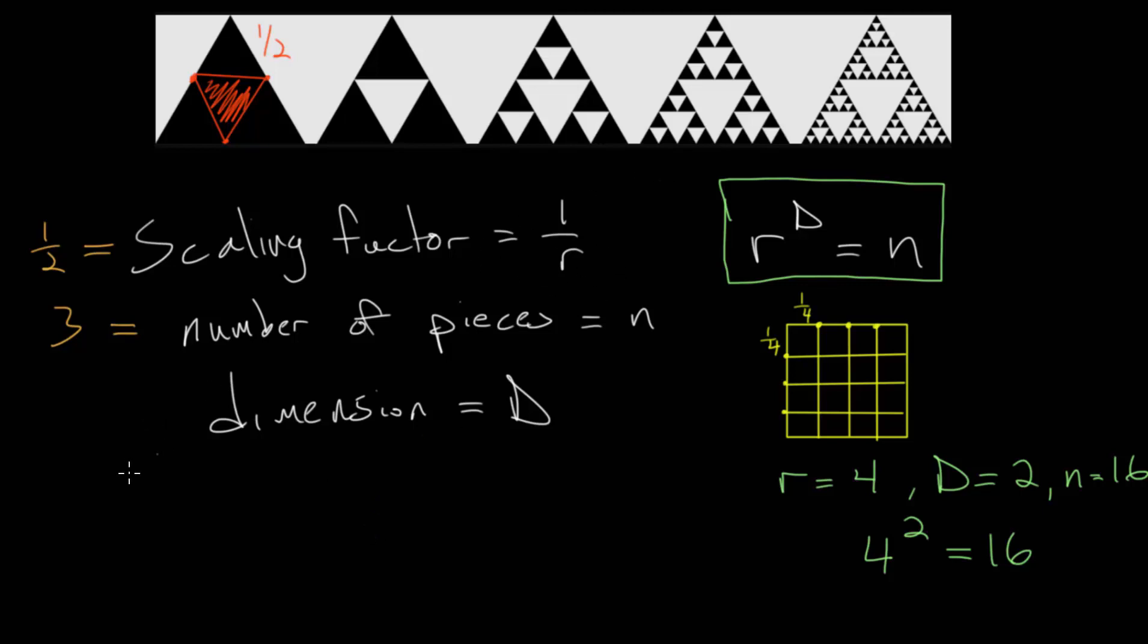Since notice that r is 2 here when we match up the scaling factor 1 over r to 1 half, and we know n is 3, we can just plug these into this equation and find that r to the d, or 2 to the d power, our dimension, is equal to n, which is 3.